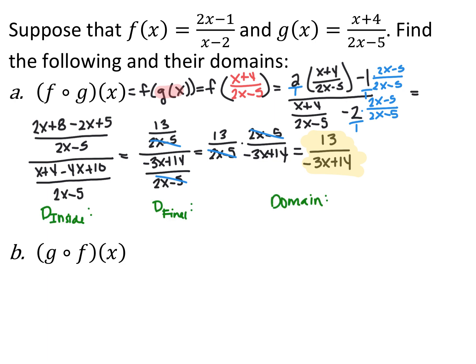To find the domain of this composite, we need two pieces. First, because we're plugging into g of x first, we take the domain of the inside function g of x: x cannot equal 5 halves, since that makes the denominator zero. We also take the domain of the final function 13 over negative 3x plus 14, so x cannot equal 14 over 3. The total domain is x cannot equal 5 halves or 14 over 3.